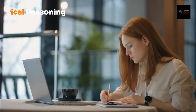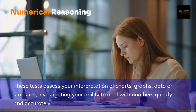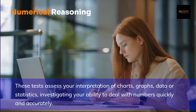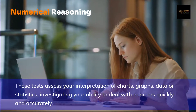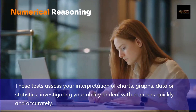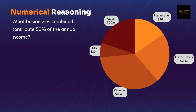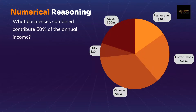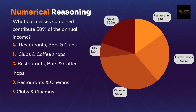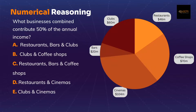Let's begin with numerical reasoning. These tests assess your interpretation of charts, graphs, data, statistics and analytics, investigating your ability to deal with numbers quickly and accurately. Here's an example: What businesses combined contribute 50% of the annual income? Option A: restaurants, bars and clubs. Option B: clubs and coffee shops. Option C: restaurants, bars and coffee shops. Option D: restaurants and cinemas. Option E: clubs and cinemas. I'm not going to give you the answer — try answering in the comments below. You can pause the video now if you need to solve this question.